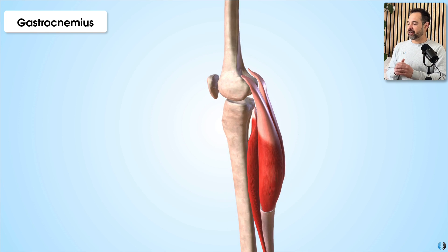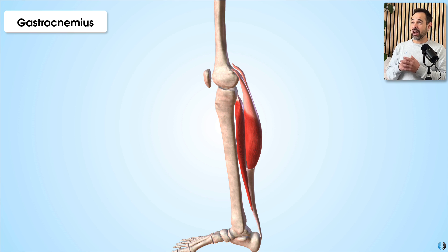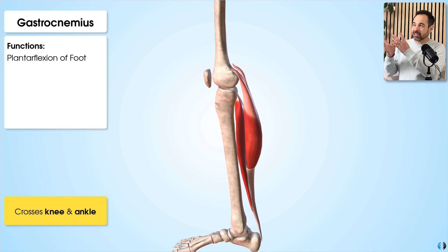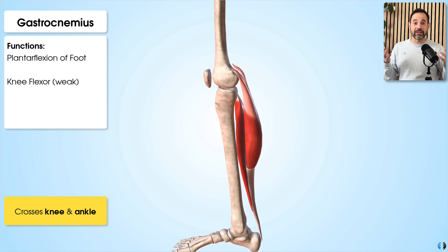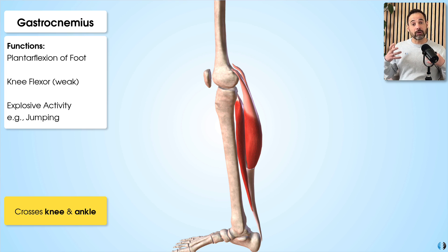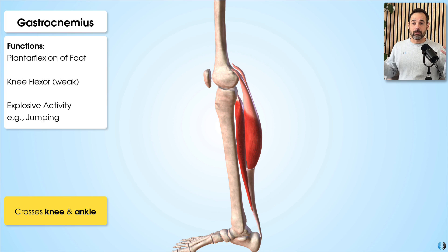Because the gastrocnemius originates past the knee joint, it has two key functions: first, plantar flexion of the foot, which is its main function, and second, because of that crossover with the knee, it also acts as a weaker flexor of the knee joint. The gastrocnemius is a really powerful muscle — it allows us to generate a lot of force very quickly but for shorter durations, making it suited for explosive activities such as jumping or propelling ourselves forward in sports.